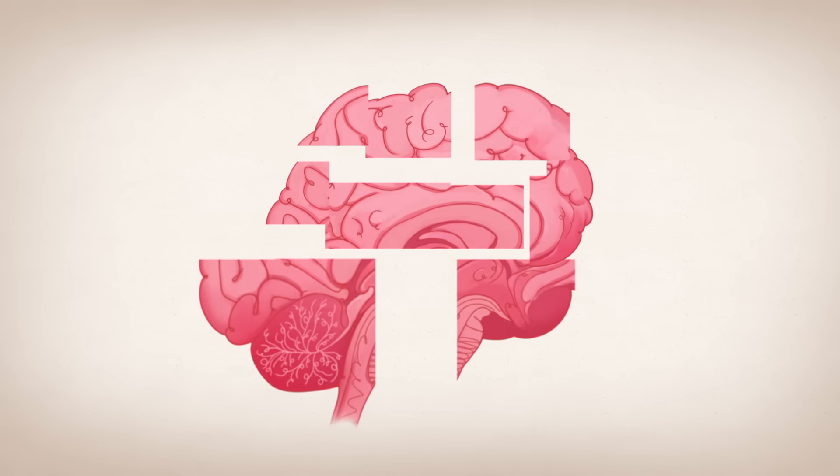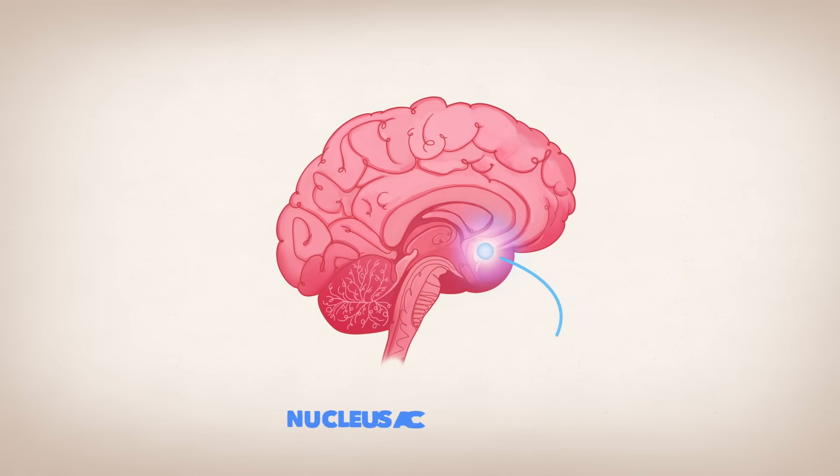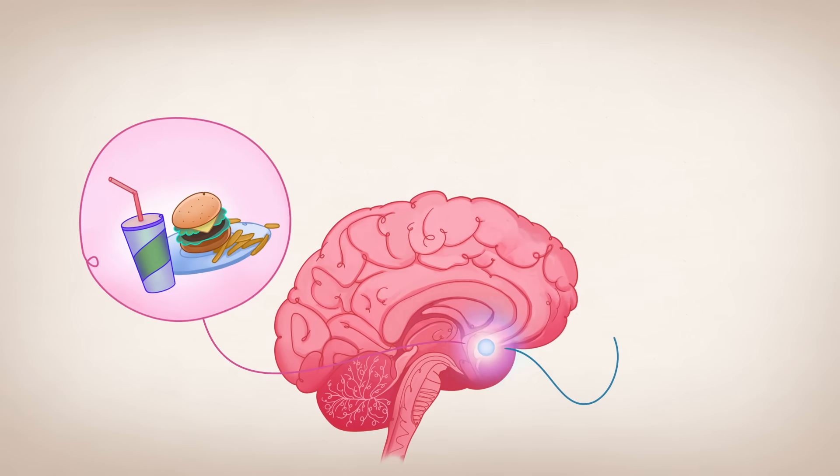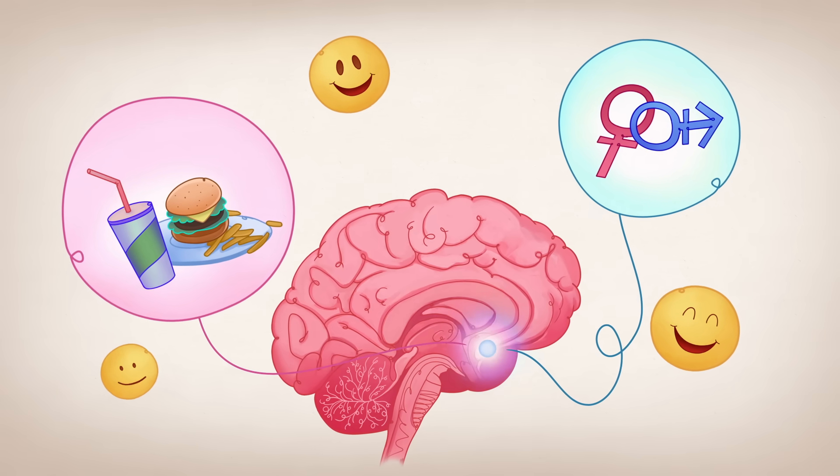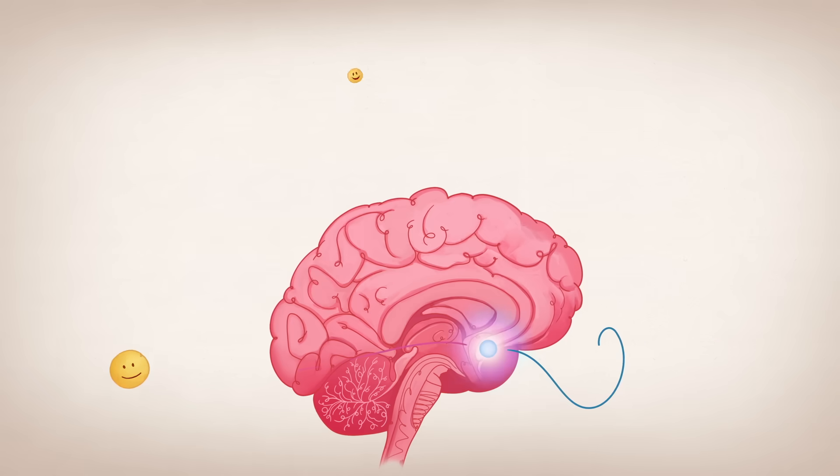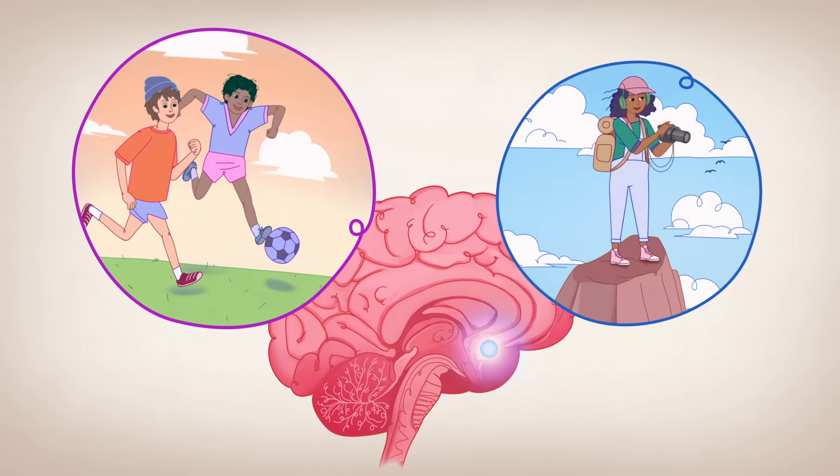Likewise, puberty organizes and restructures the nucleus accumbens involved in reward and sensation seeking. Activity in this dopamine hub is thought to drive the pleasurable sensations we feel when doing rewarding activities, like spending time with friends or having new experiences.